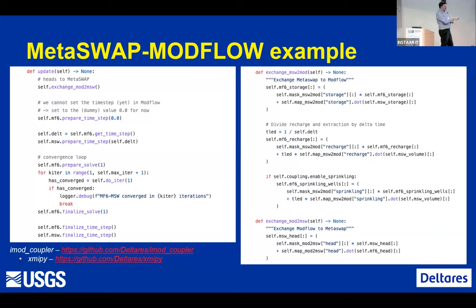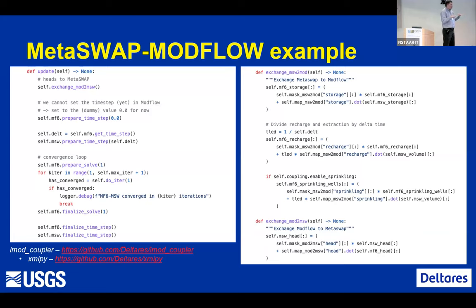Some of the data exchanged from Metaswap to ModFlow includes: updating groundwater storage parameters based on Metaswap's understanding of storage below the water table; exchanging recharge — the water that comes out of the unsaturated zone and recharges the groundwater system; and, if irrigation is turned on, setting groundwater pumping rates based on irrigation demand. When exchanging data from ModFlow to Metaswap, we're basically exchanging head — the condition we want to equilibrate to in both of those codes.